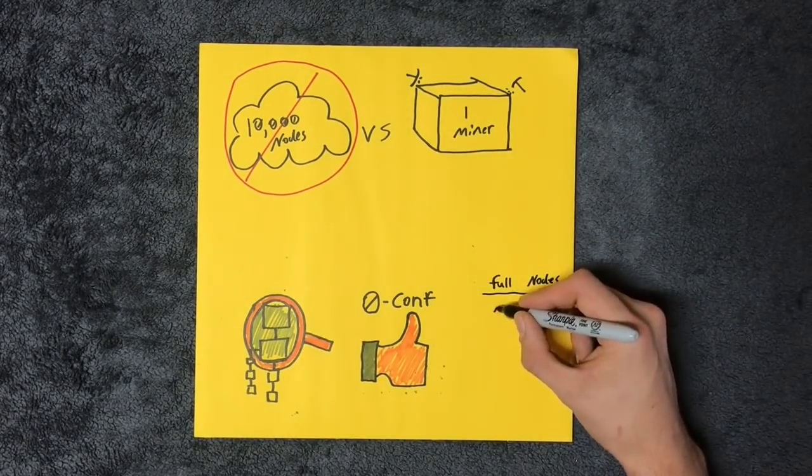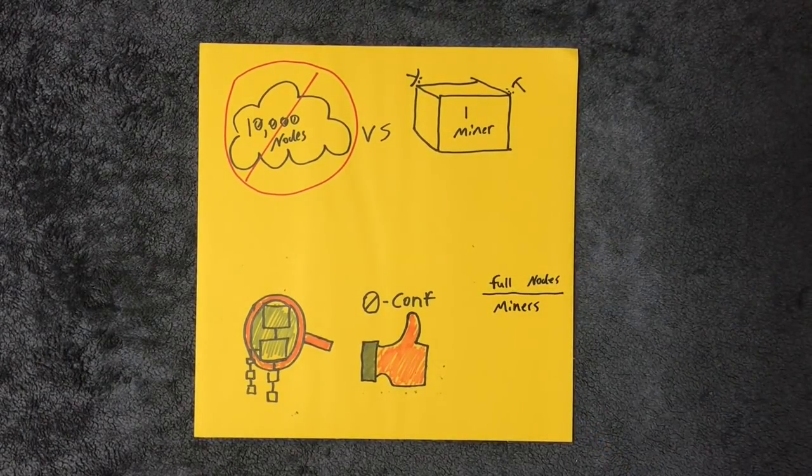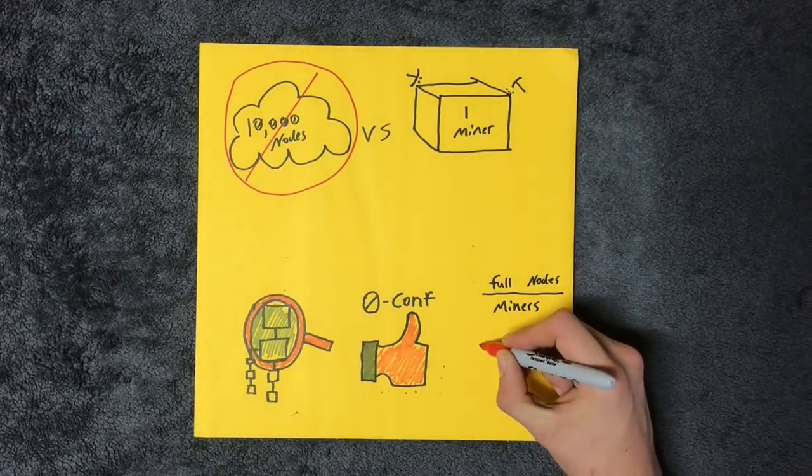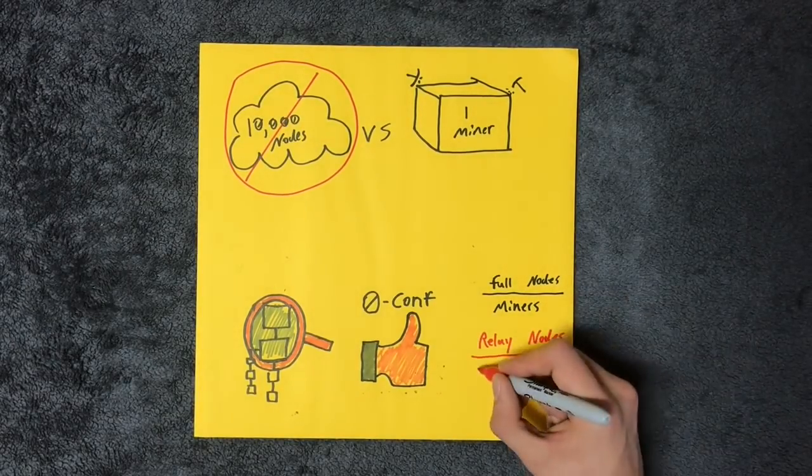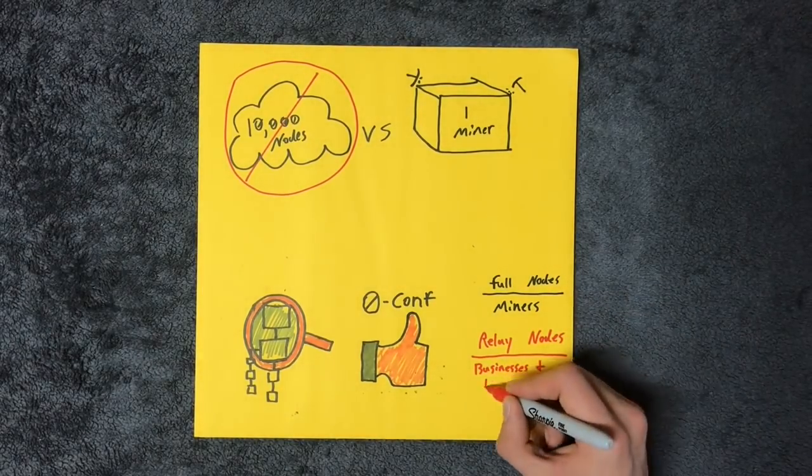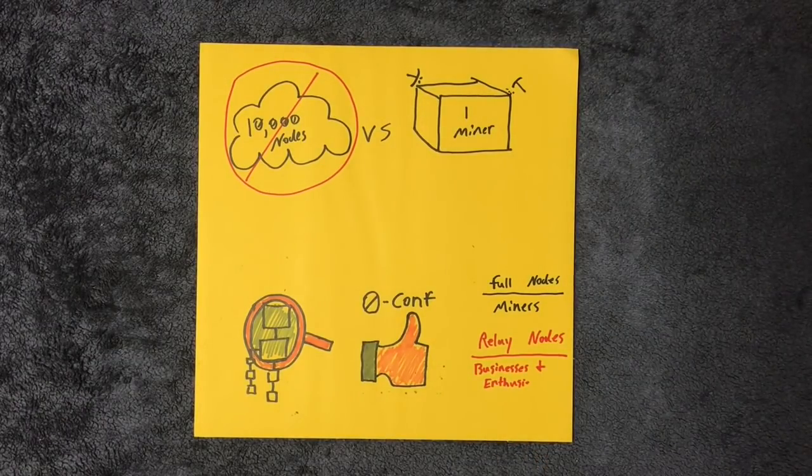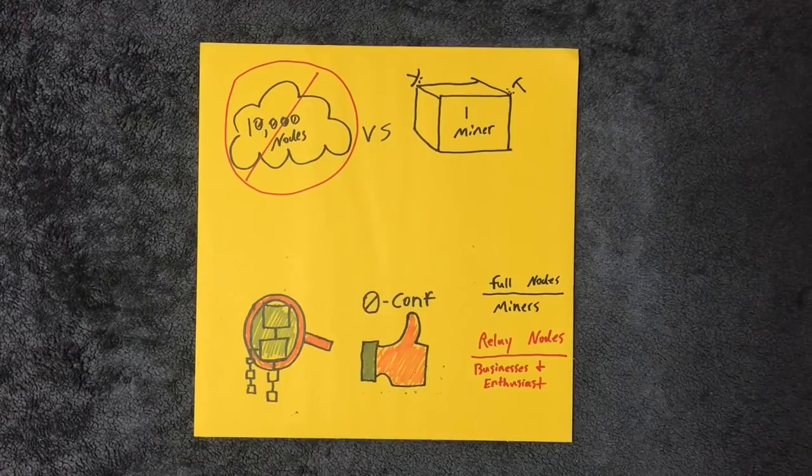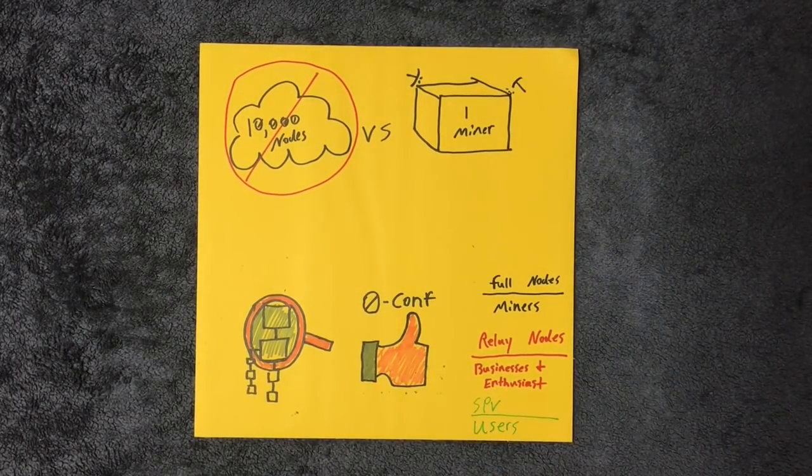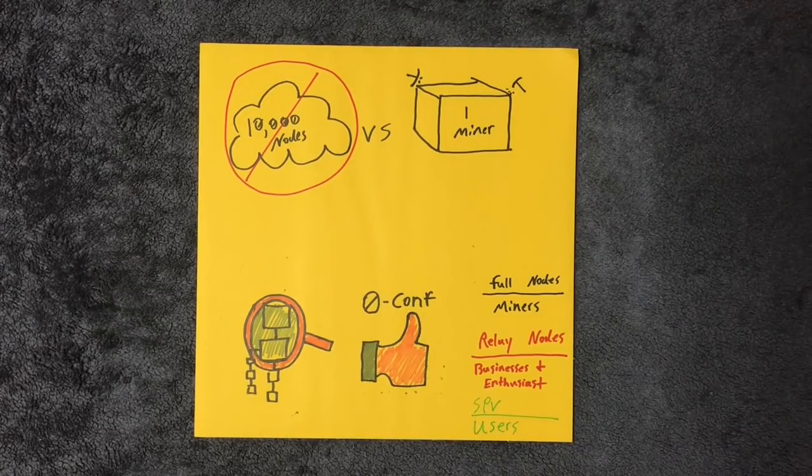As Satoshi said, users should use SPV wallets. Have you ever heard anyone talk about the lack of security and reliability of SPV cold wallets, like Trezors or Ledgers? No, they are above secure. The issue is not that nodes could potentially be consolidated. The issue is the lie that regular users should have to run nodes.